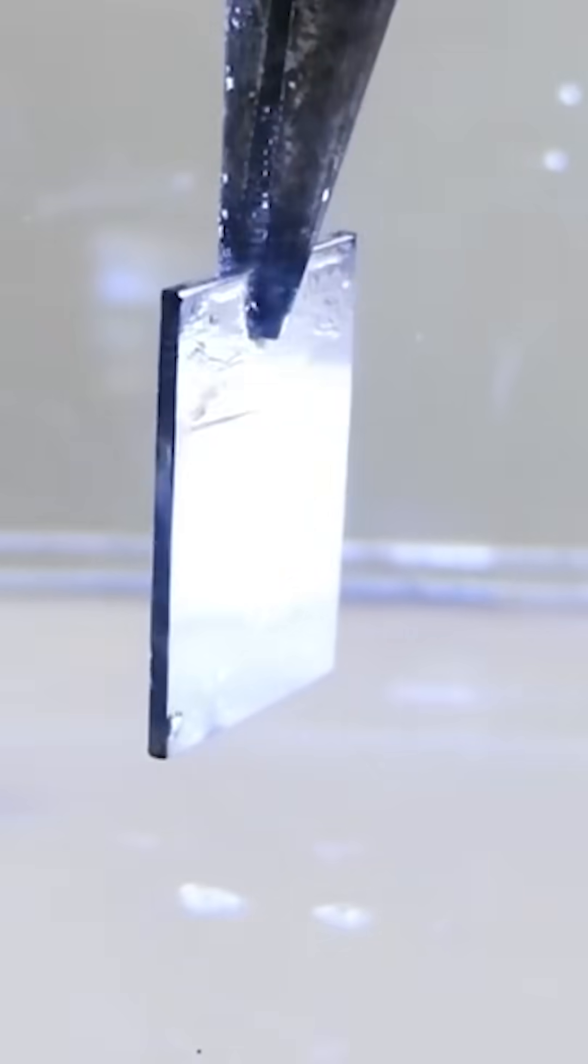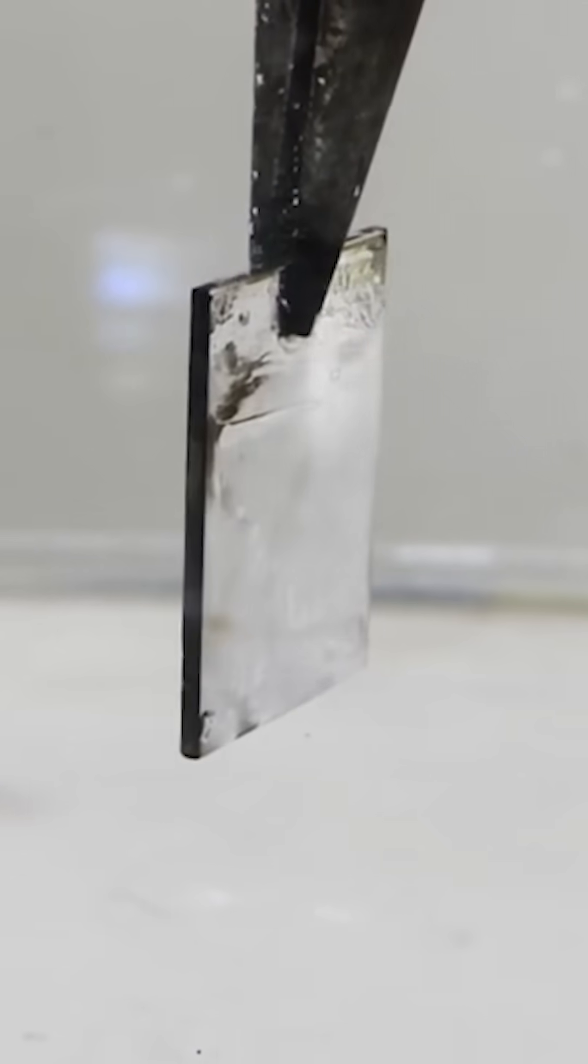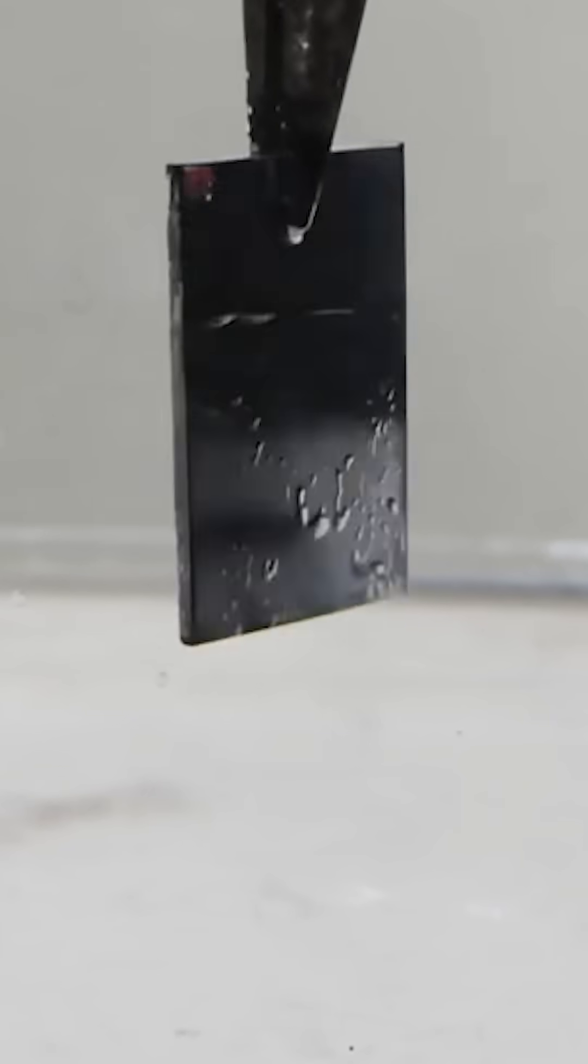I made a material that reflects 100 percent of the light that hits it. But wait, change the angle and it becomes completely black, absorbing almost all the light that hits it.